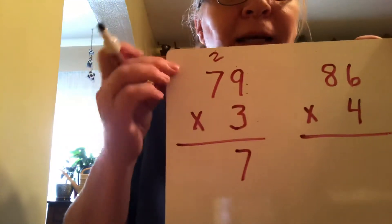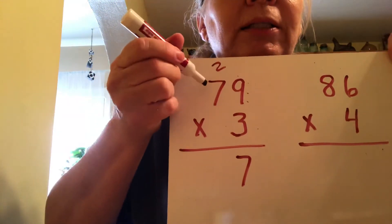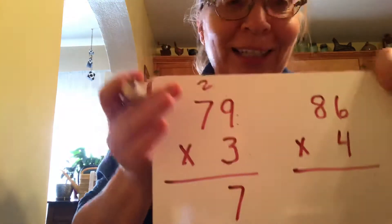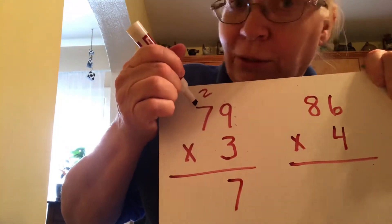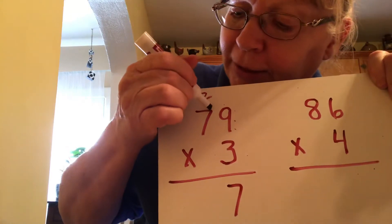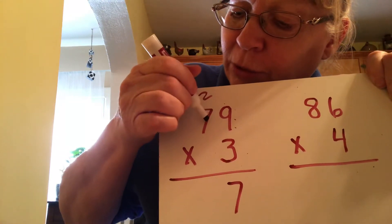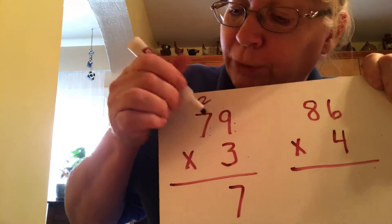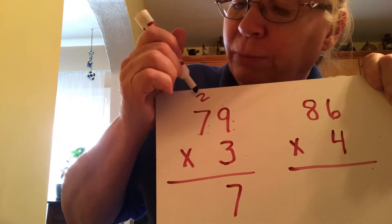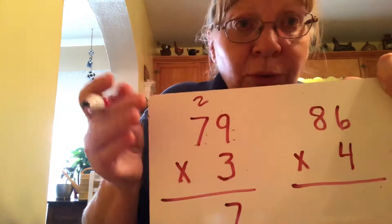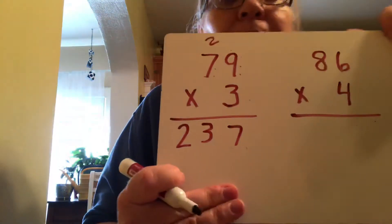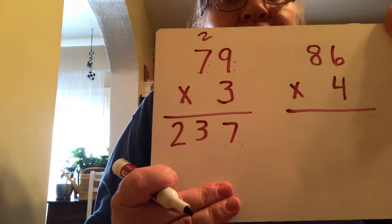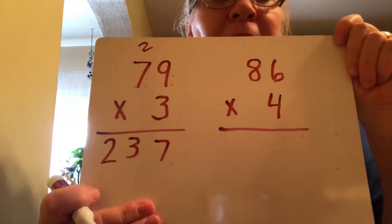Then we're going to go 3 times 7, which is going to be 3, 6, 9, 12, 15, 18, 21, plus we have the 2 we carried up here, so 21 plus 2 is 23. We remember to line everything up, and our answer is 237.